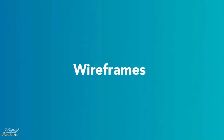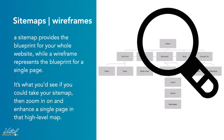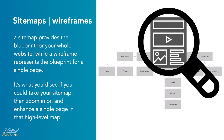A website wireframe, also known as a page schematic or a screen blueprint, is a visual guide that represents the skeletal framework of a website. If a sitemap provides the blueprint for your entire website, a wireframe represents a blueprint for a single page or group of pages. It's what you'd see if you could take your sitemap and zoom in on a single page in that high-level map.